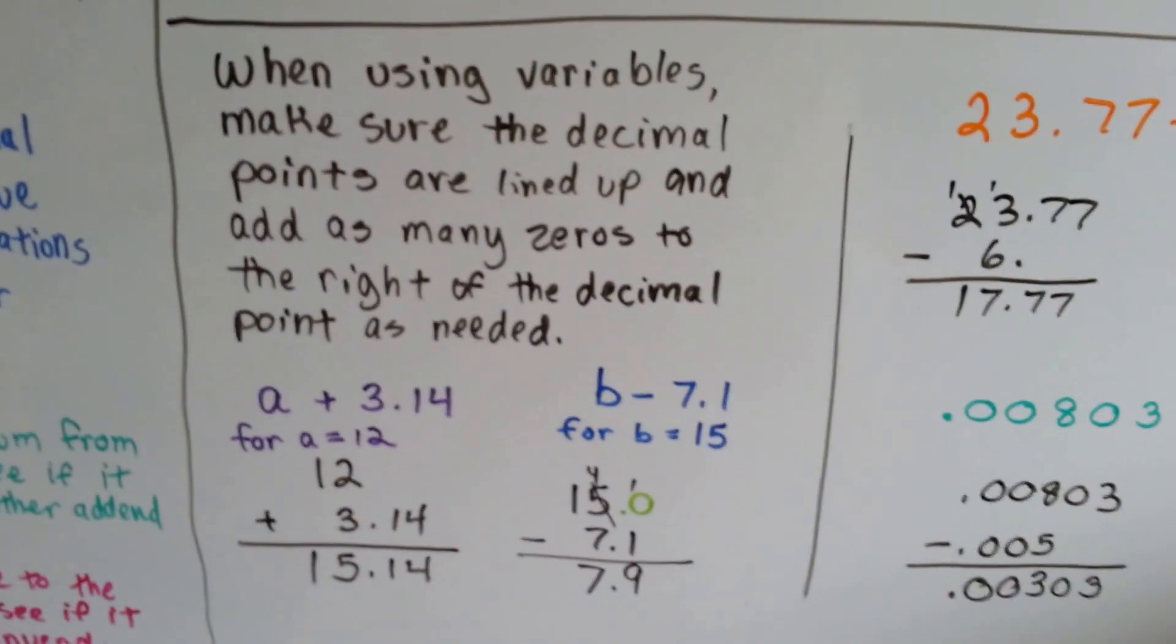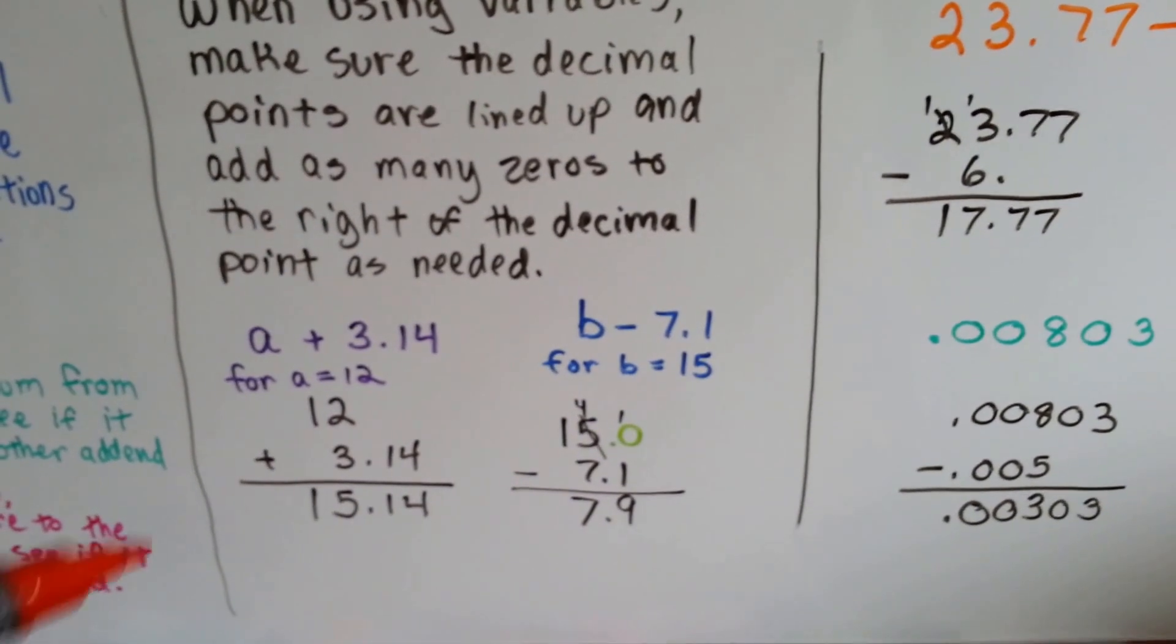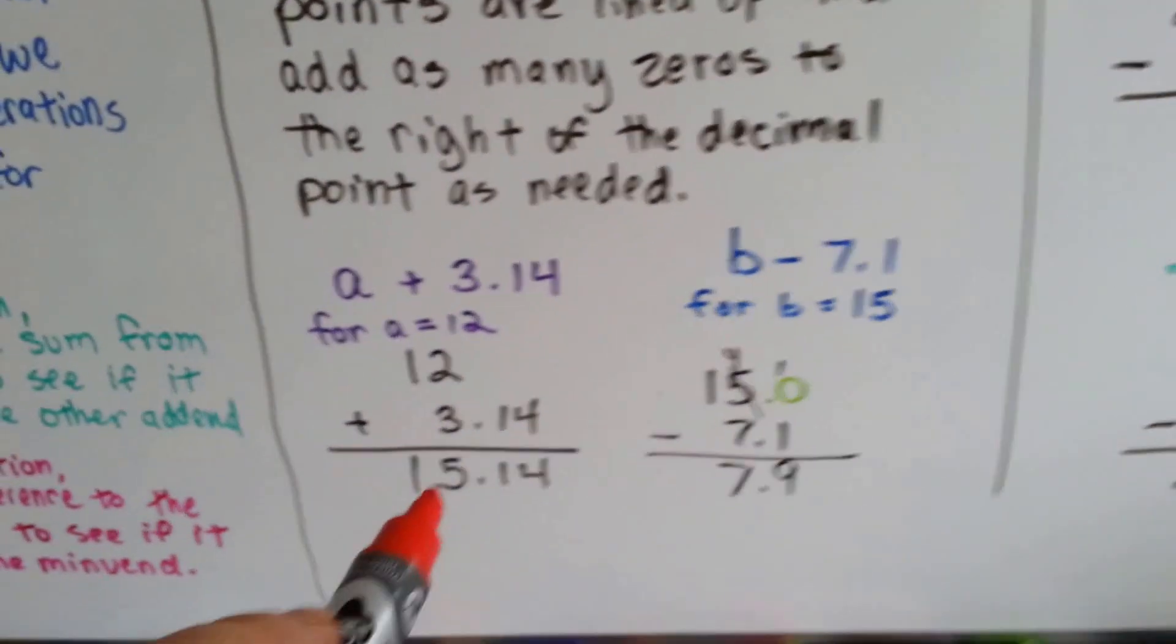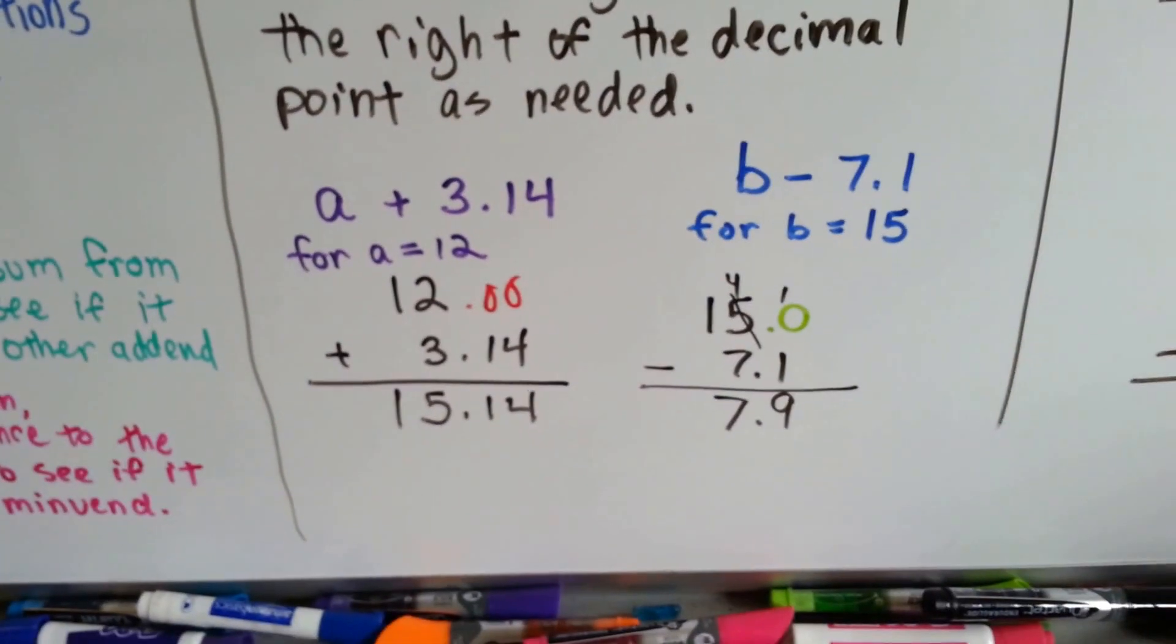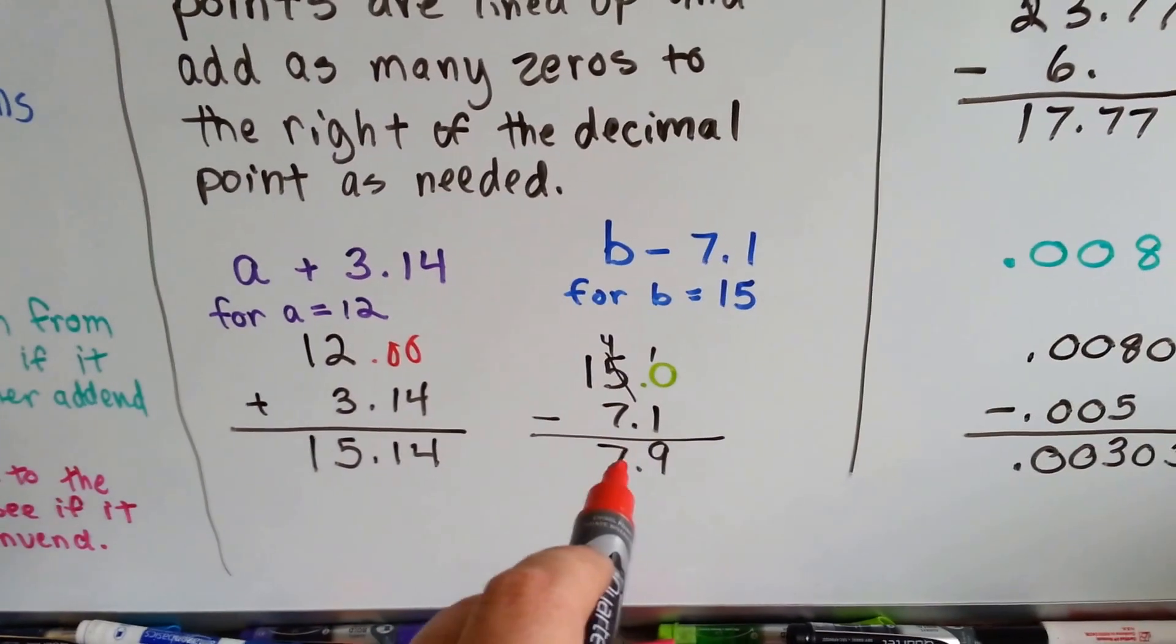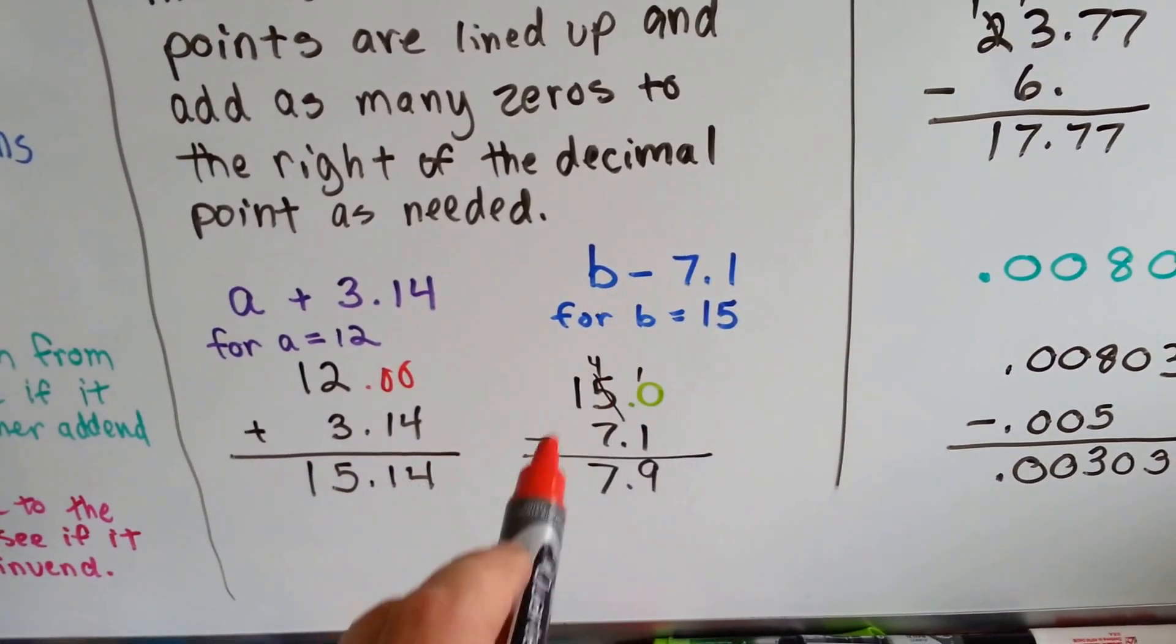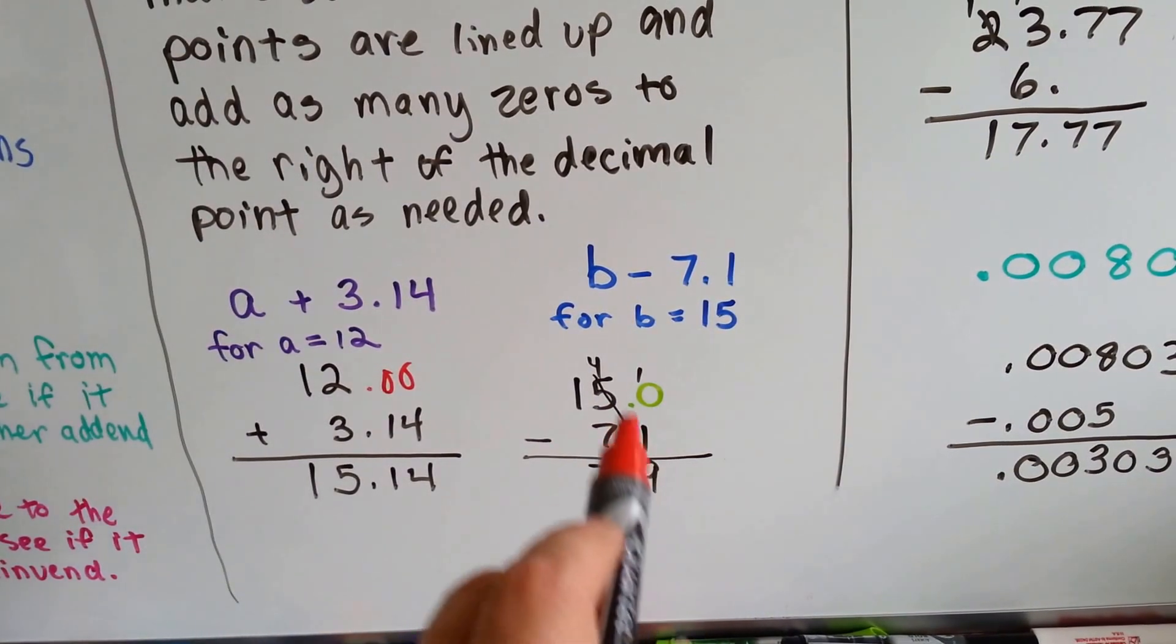When using variables, make sure the decimal points are lined up and add as many zeros to the right of the decimal point as needed, just like we've been doing. So if it says a plus 3.14, 3 and 14 hundredths, and a is equal to 12, well, if we're adding, we don't really need to put zeros there if we don't want to, but we could. If it makes your life easier, you can just put them there. But you're just going to drop the 14 anyway. And for subtraction, you are going to want to put the zero there because you might need to rename or regroup. So if you have b minus 7.1 and b equals 15, you might have to put a zero in the tenths place to help you so that you can regroup and take 1 from it.